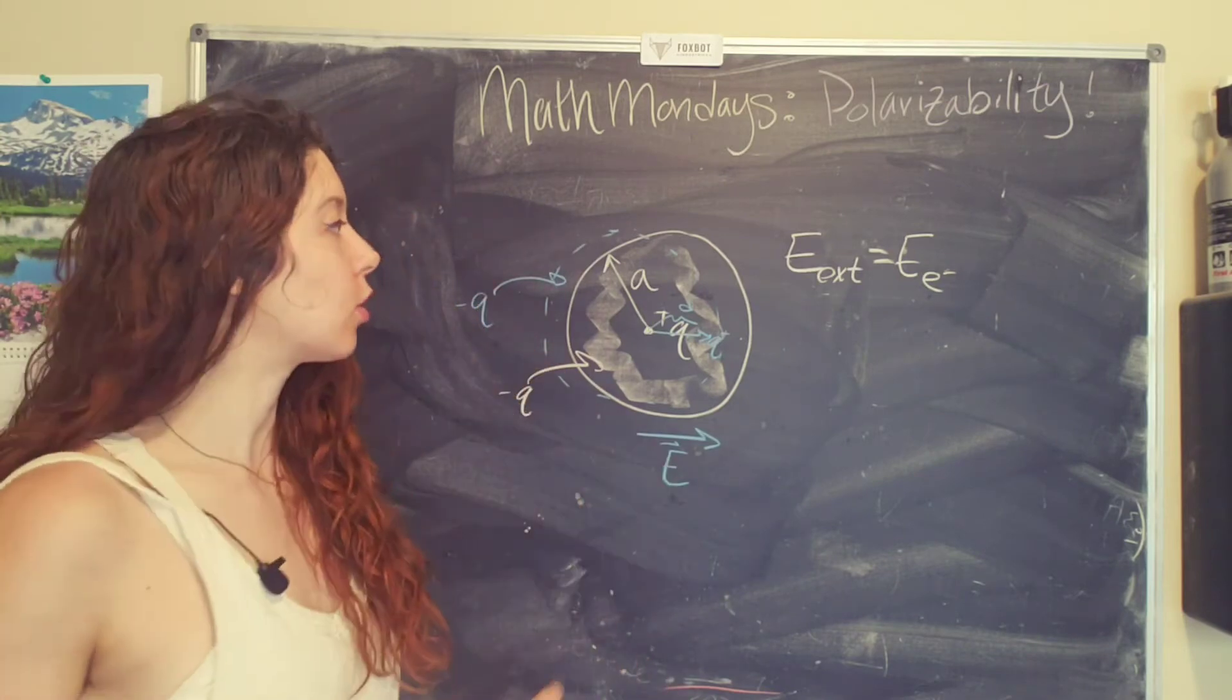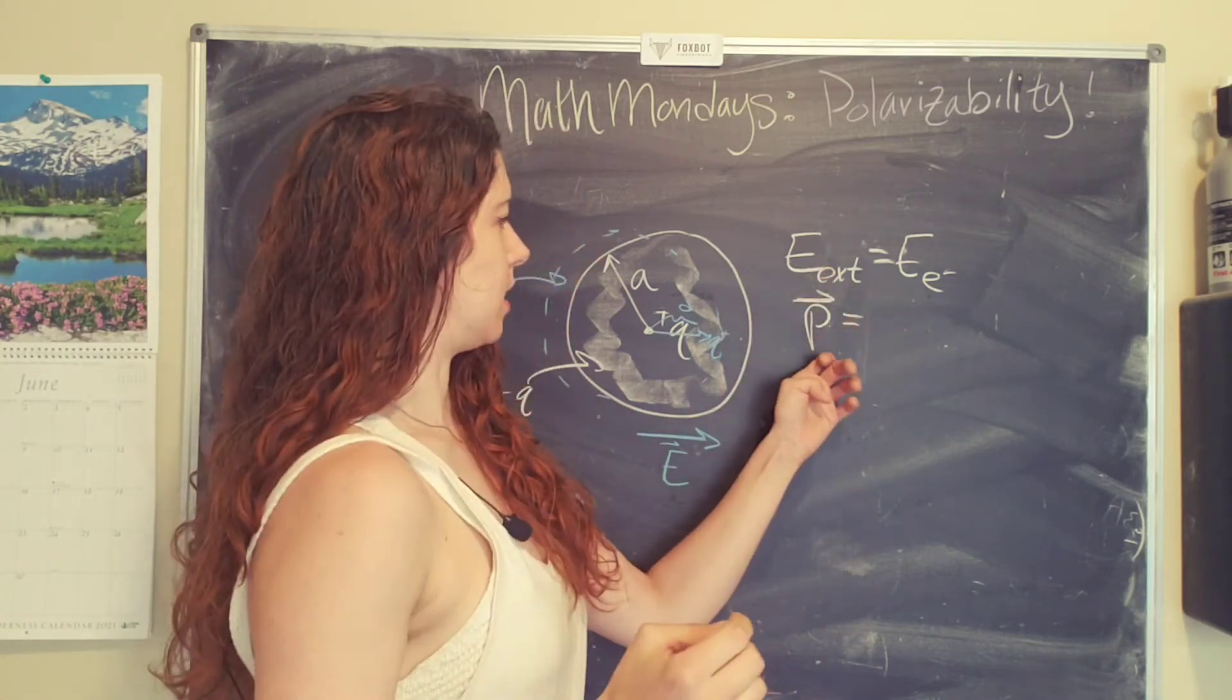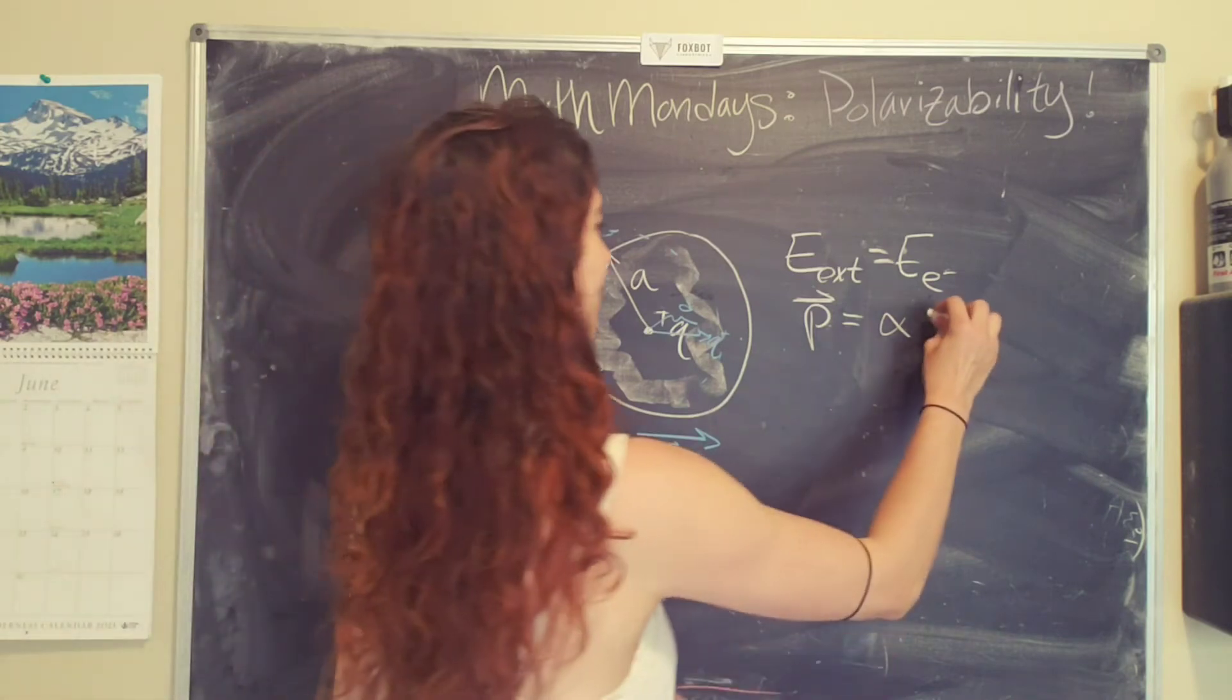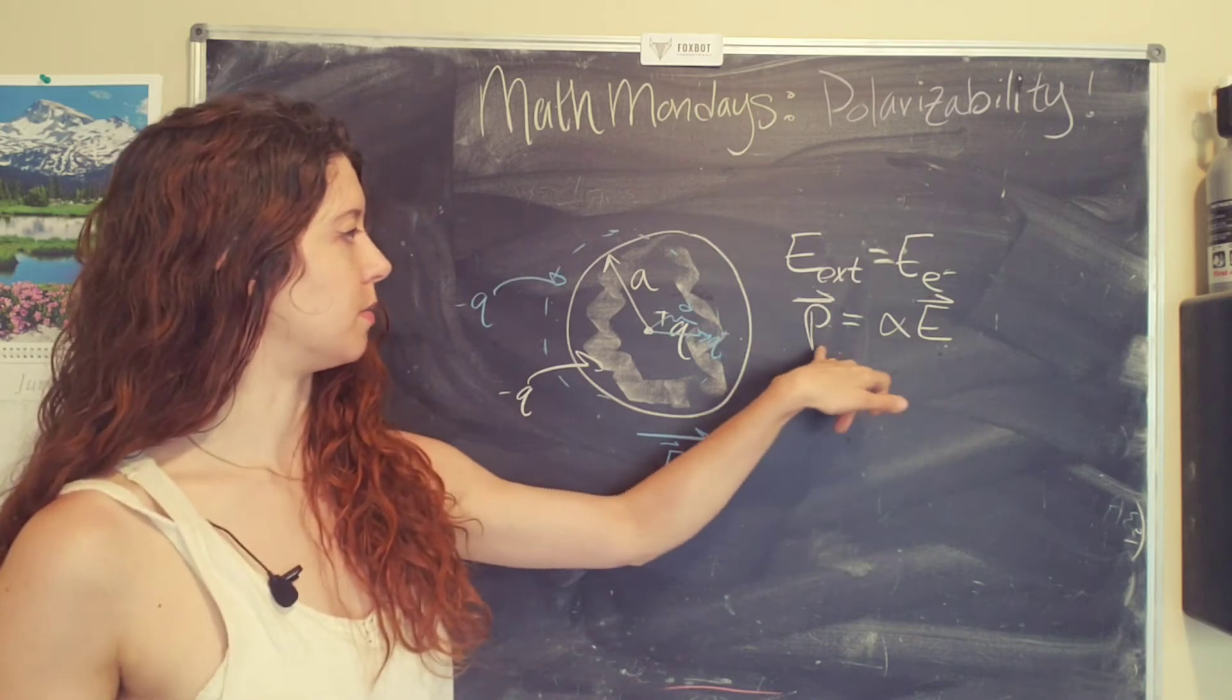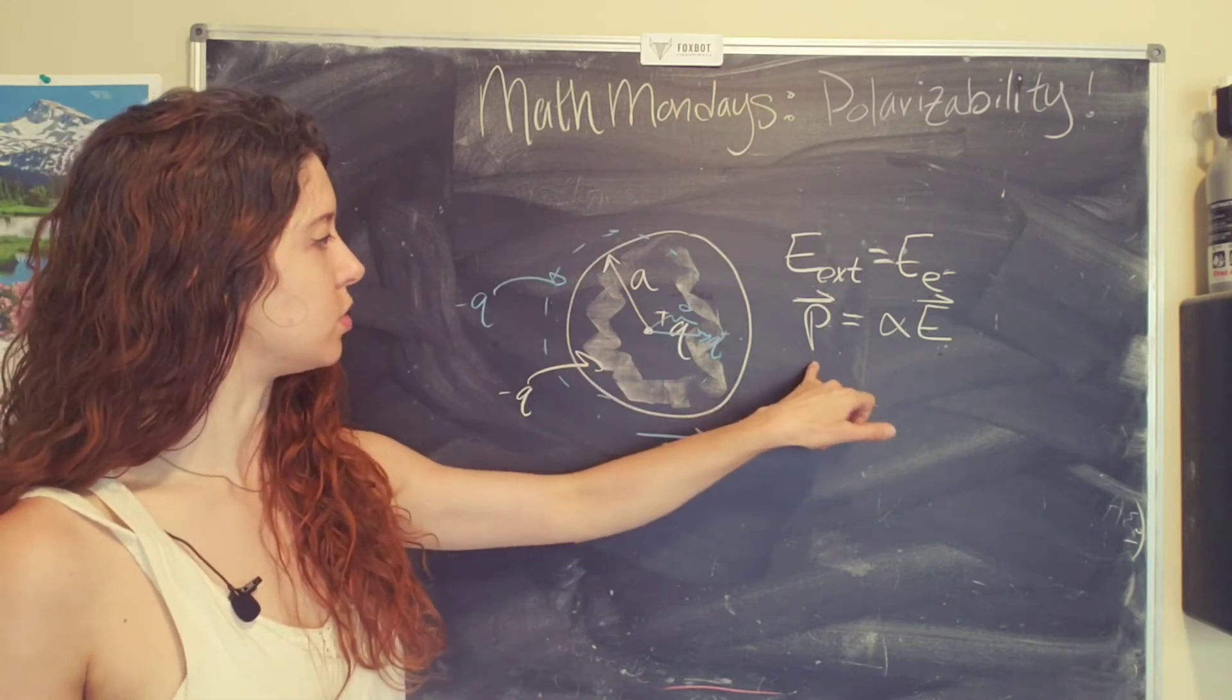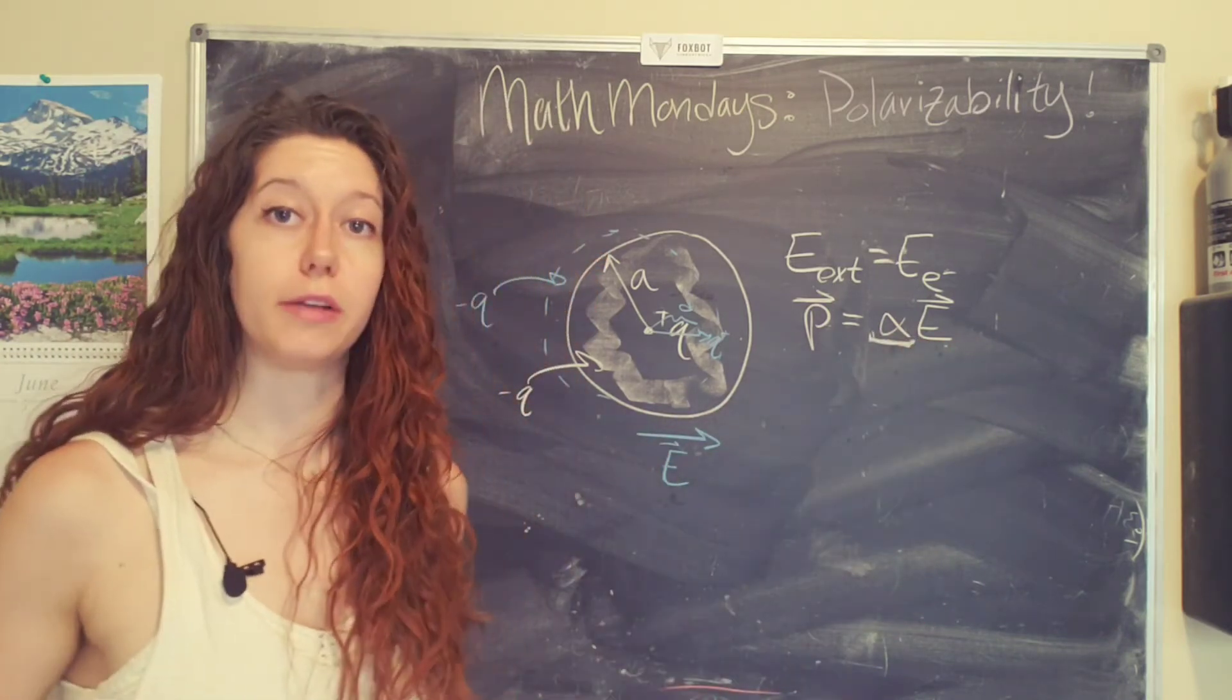And now we need our equation for the induced dipole moment, which if you remember from the intro video, is this is the symbol for the dipole moment. And so this equals the atomic polarizability, one of my new favorite words, times the external electric field. So basically how much the electron and the nucleus move, this induced dipole moment, is proportional to some constant, which depends on the atom and the external applied field.